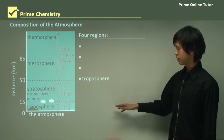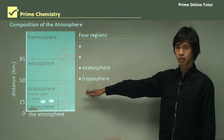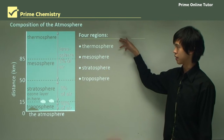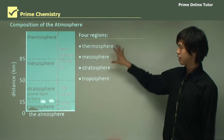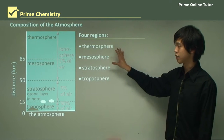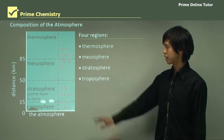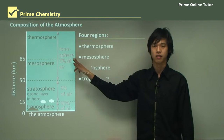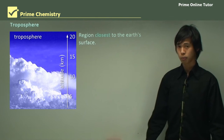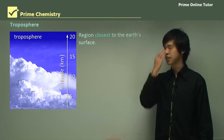The troposphere is the bottom layer, the stratosphere is the second, followed by the mesosphere and the thermosphere. The thermosphere and the mesosphere are sometimes referred to together as the ionosphere, so if you see that term, that's what it's referring to. We'll talk more closely about what each region is and how it affects us.